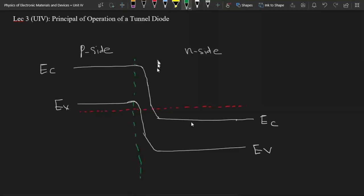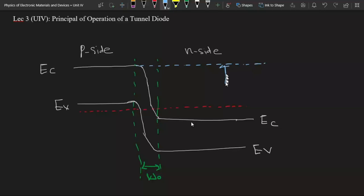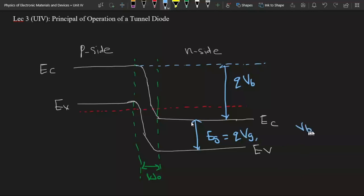This is the width of the depletion region, which we can assume as W0. The built-in potential energy is equal to this gap, that is qVB, where VB is the built-in voltage. If we write the energy gap equivalent voltage as Vg, then we can see that VB is greater than Vg — that is, the built-in voltage is greater than the energy gap equivalent voltage.